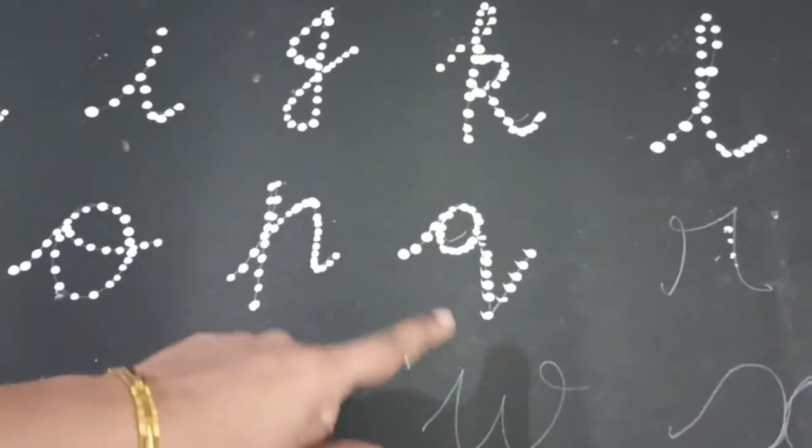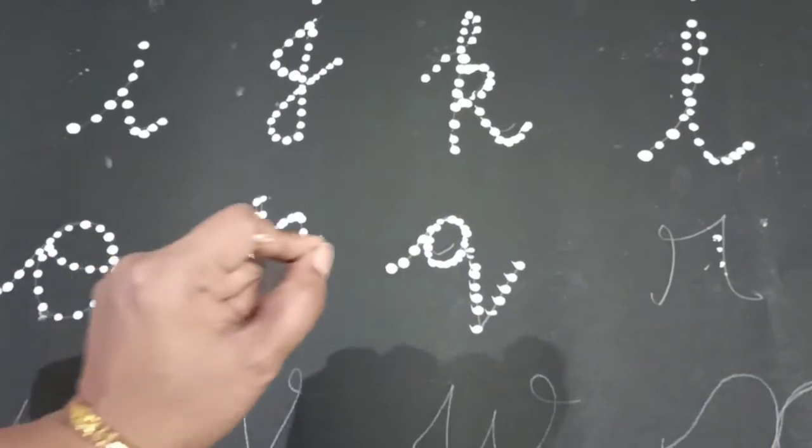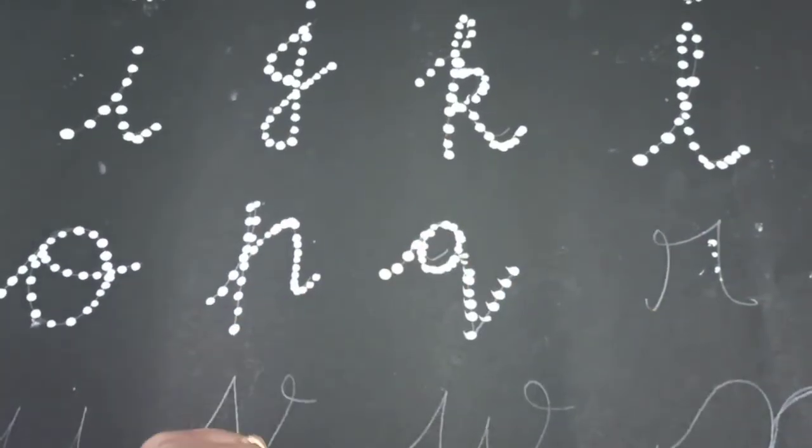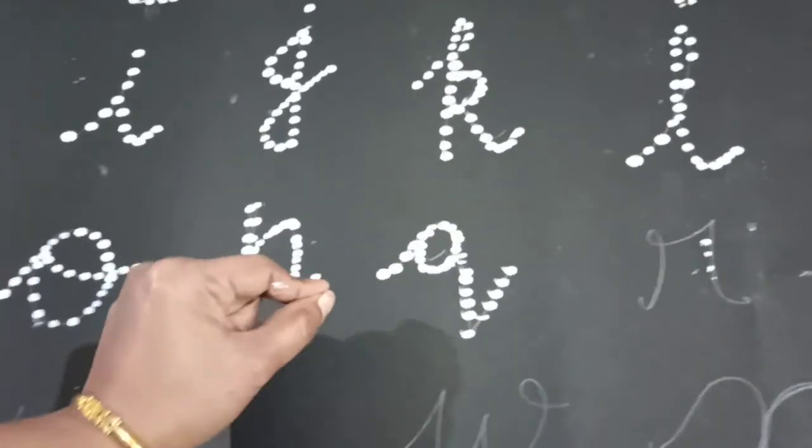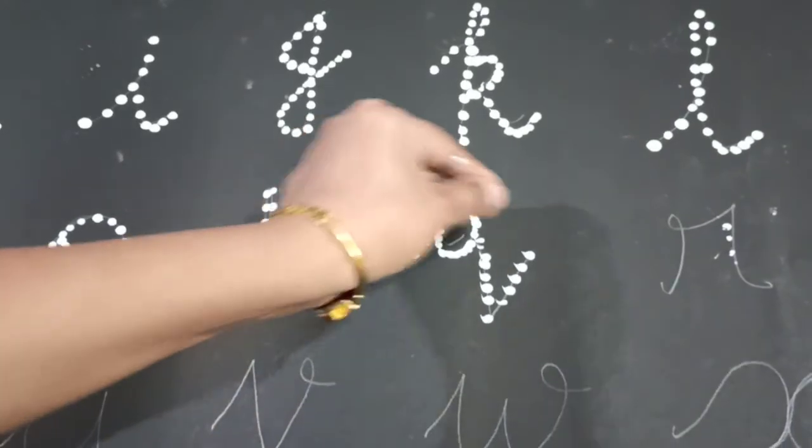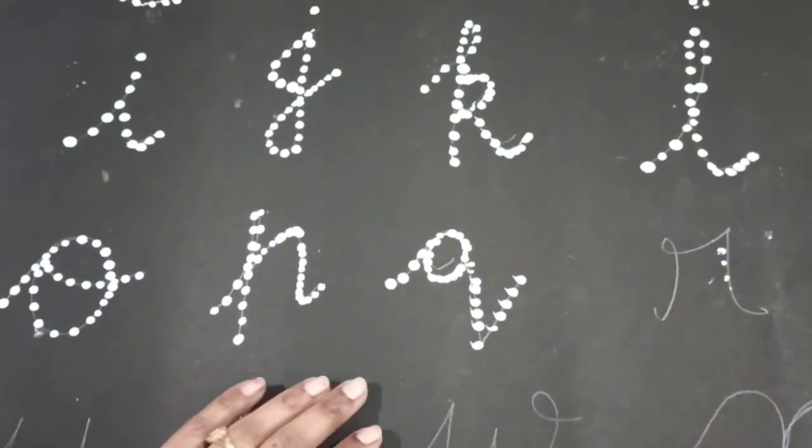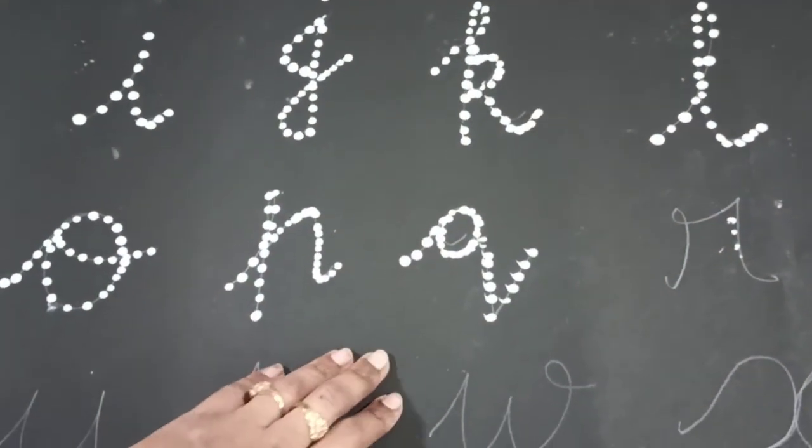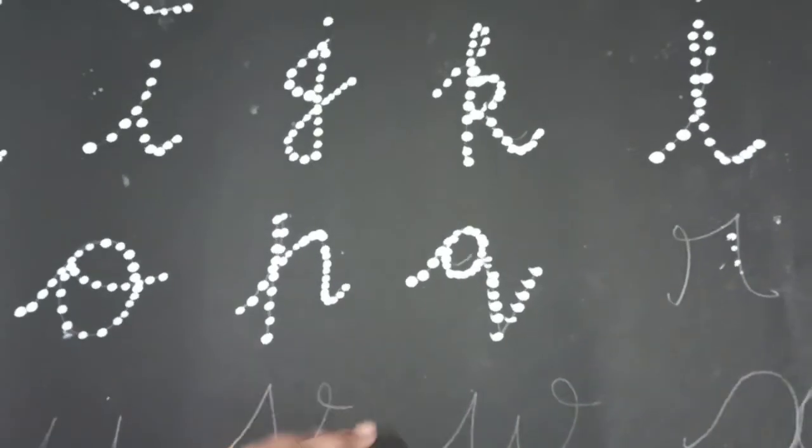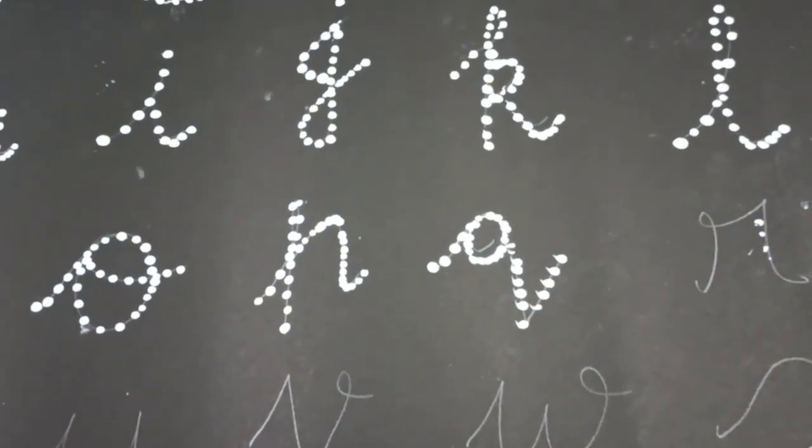Parents, you can take any rough book. On that, the child will make the dots so that they will understand the format, how it will start, how it will end, so that they will learn easily. Try to do this activity in any rough book, whichever is convenient for you.